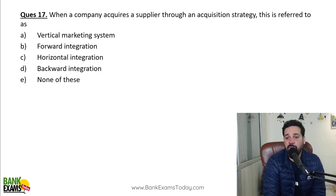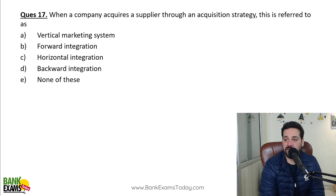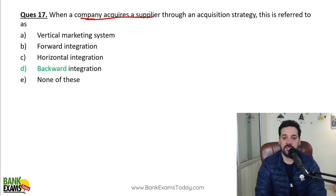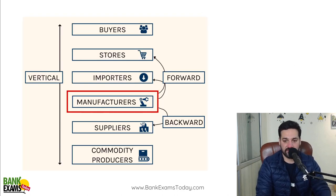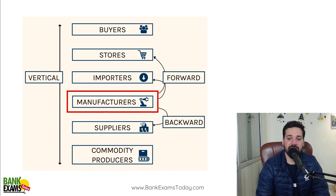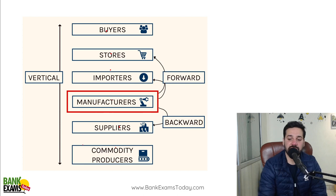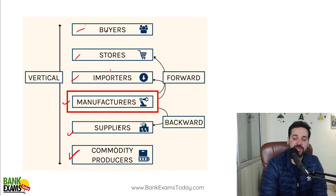When a company acquires a supplier through an acquisition strategy, this is referred to as backward integration. So in a supply chain, you have commodity producers, suppliers, manufacturers, importers, stores, and buyers.